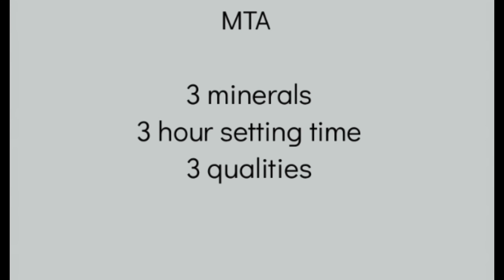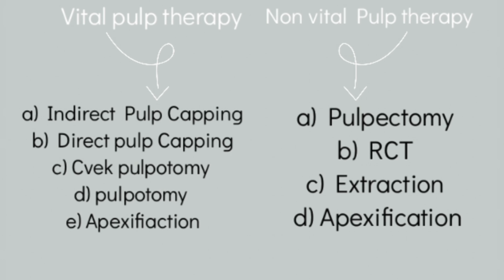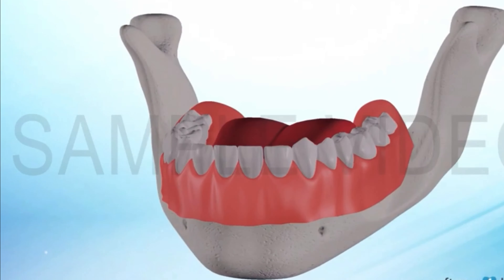Now we come to the vital pulp therapy section. Vital pulp therapy includes treatment options for a pulp that is vital and you want to maintain its vitality, but there is some exposure, trauma, or something troubling the pulp. This slide covers all the vital and non-vital pulp therapies. The first procedure in this section is indirect pulp capping.